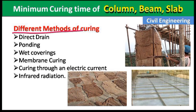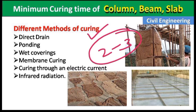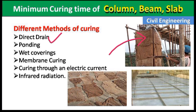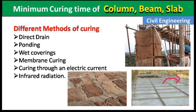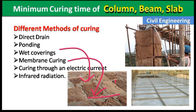Now let us look at the different methods of curing. There are various methods, but in practice when we construct a building we generally use two to three methods. The first is direct drain — providing water directly on the concrete with the help of pipes or other materials. The second is ponding — we provide a small barrier of clay or cement to resist water from flowing away and create a pond-like structure on the concrete surface.